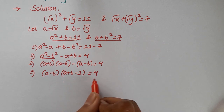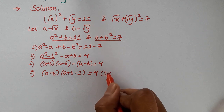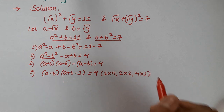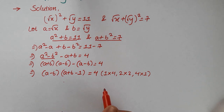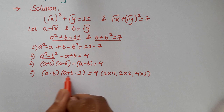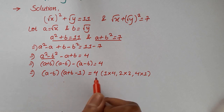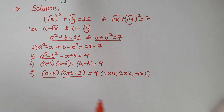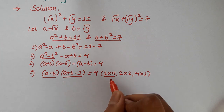Now 4 can be written as a product of two numbers in three ways: 1 multiplied by 4, 2 multiplied by 2, and 4 multiplied by 1. By observation, the second term is greater than the first term because it is a sum of two numbers, while the first is their difference, and for any two numbers the sum is greater than the difference. So the second term must be greater than the first. Looking at the possibility 1 multiplied by 4, the first term is less than the second, which is valid.